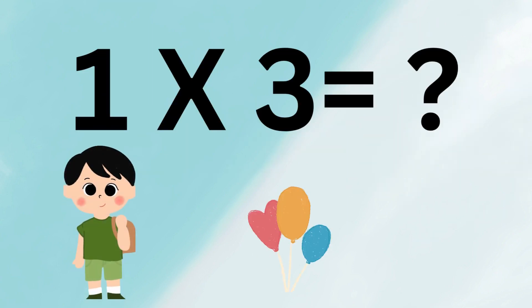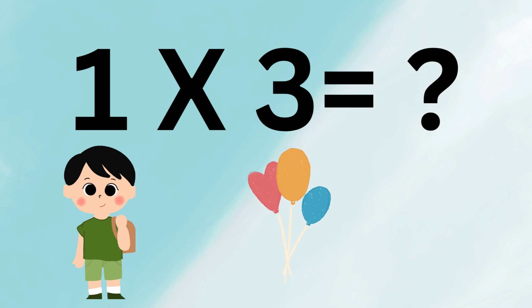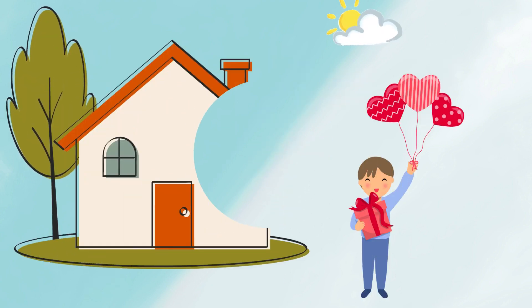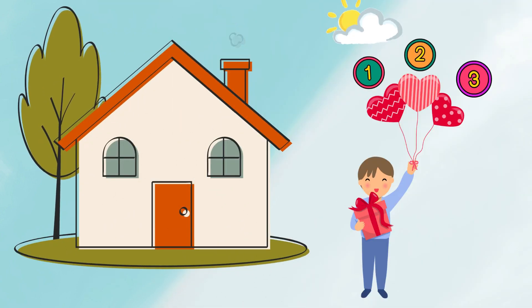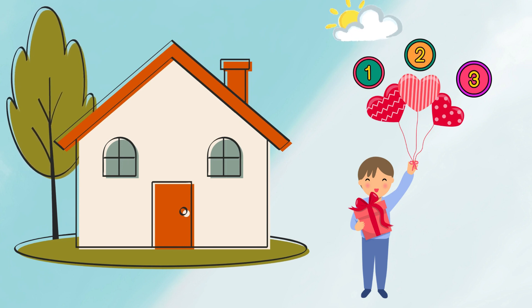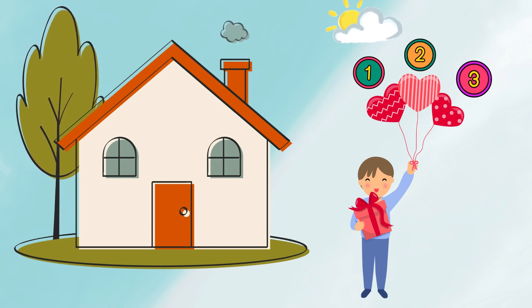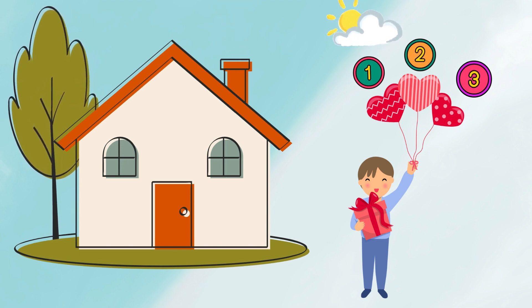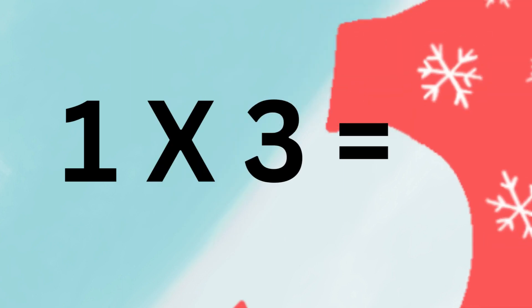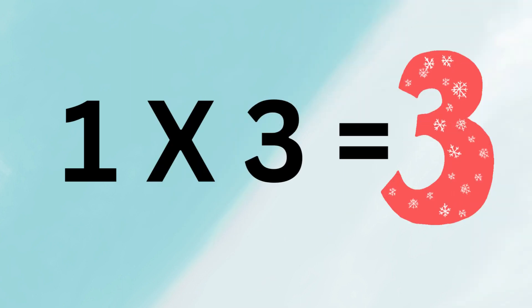Kids, let's have another example: what comes after 1 multiplied by 3? Let's suppose 1 denotes 1 boy and 3 denotes having 3 balloons for this boy. Kids, you can see 1 boy having 3 balloons in his hand. Let's count together all balloons in total: 1, 2, 3. Kids, total balloons are 3. So the answer of 1 multiplied by 3 is 3.